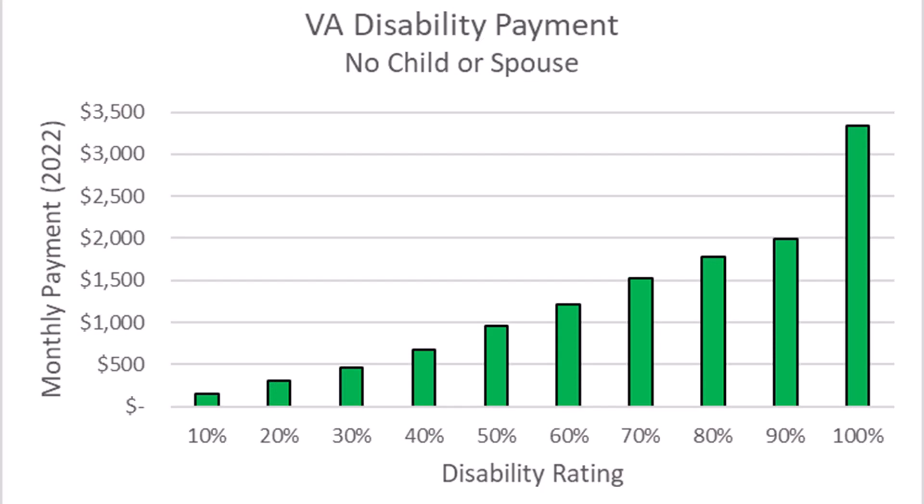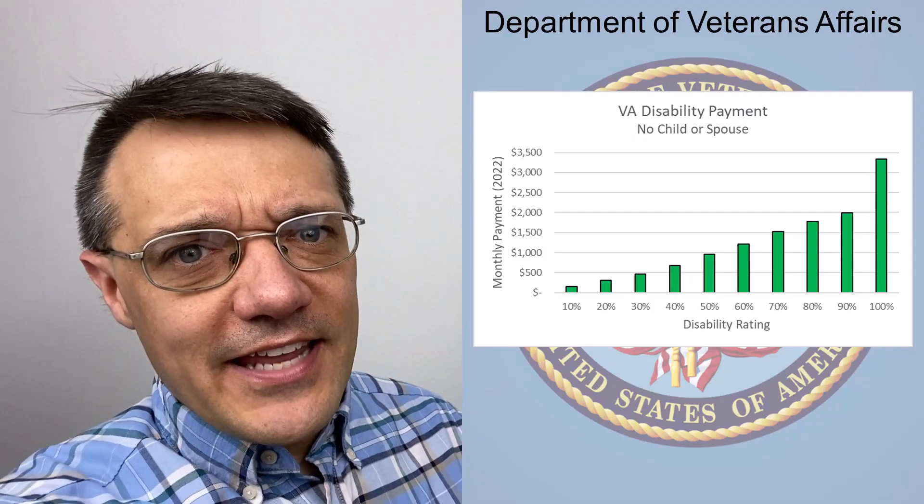Essentially, Congress created 10 levels of economic impairment and named them 10% through 100%. And then they set a dollar value for each one of those levels of economic impairment that has nothing to do with your personal financial situation or your abilities. In fact, they could just as easily have named these 10 levels of economic impairment alpha through kappa or Washington through Tyler for the first 10 presidents.